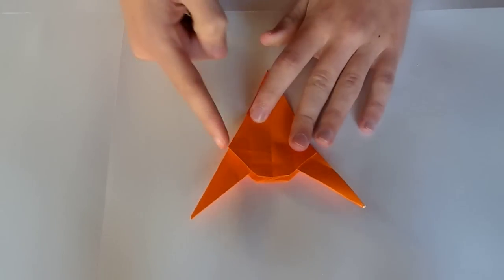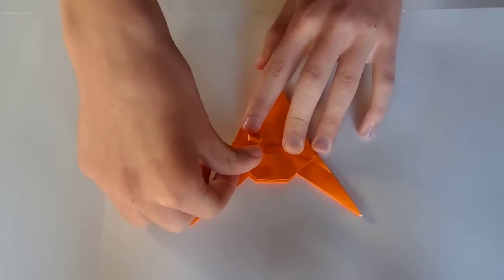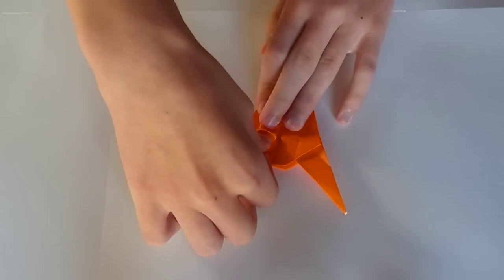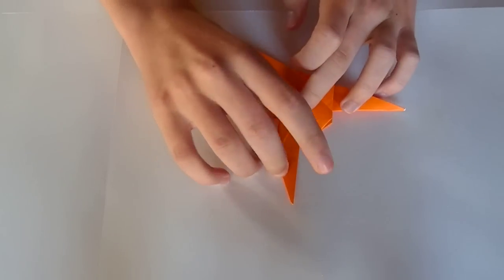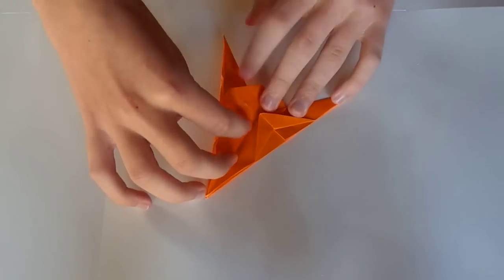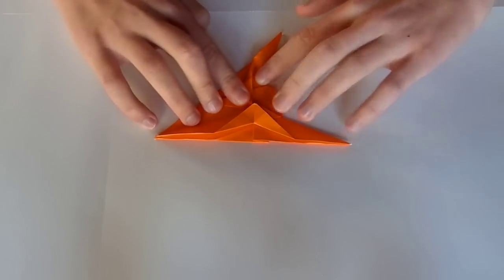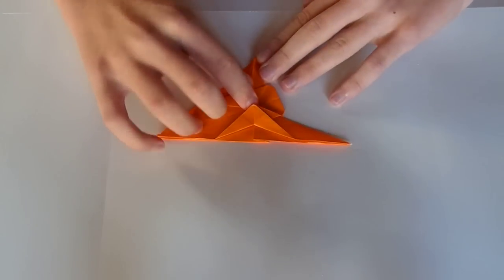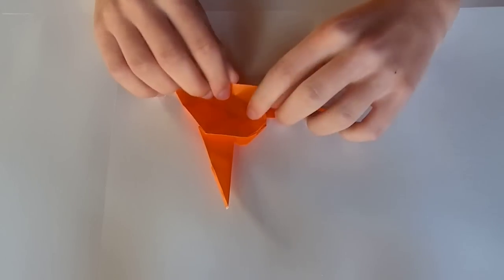And now fold in the corners you just made. Then squash this down like this. So it will look like this. Then repeat on the other three corners. So fold in and squash. Turn over. Do the same thing.